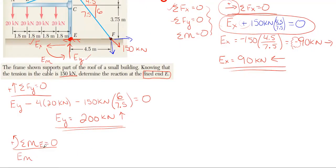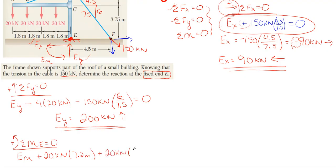The moment reaction E sub m is assumed counterclockwise, so it's positive. Each of the four 20 kilonewton forces rotates counterclockwise about E, so they're all positive. Their perpendicular distances from E are 7.2, 5.4, 3.6, and 1.8 meters respectively. So we have plus 20 times 7.2, plus 20 times 5.4, plus 20 times 3.6, plus 20 times 1.8.